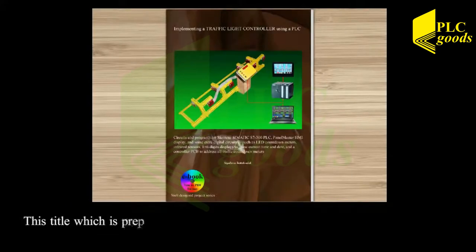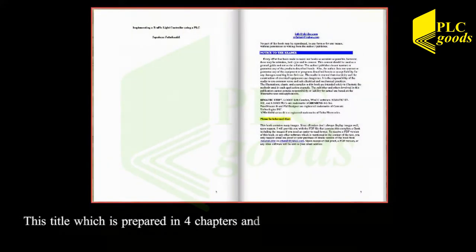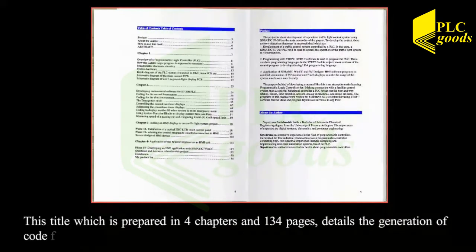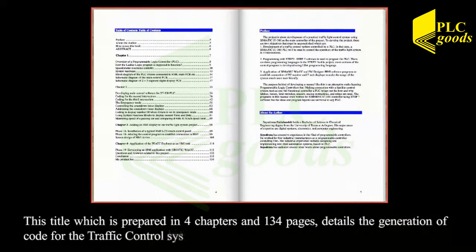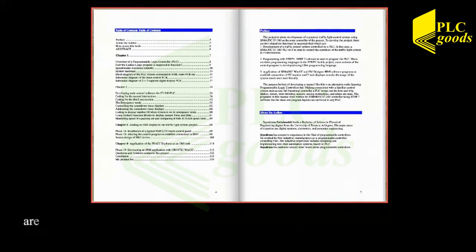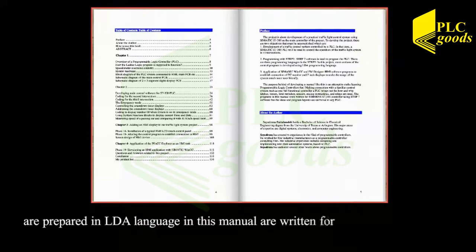This title, which has been prepared in four chapters and 134 pages, details the generation of code for the traffic control system. All main control program solutions are prepared in ladder language. The manuals are written for Siemens Simatic S7-300 PLC.